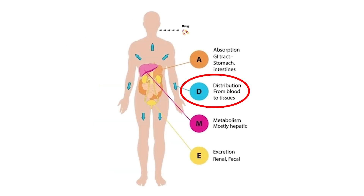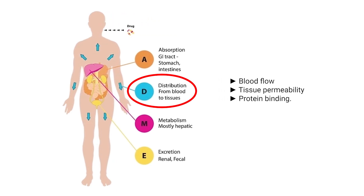Distribution. Once absorbed, the drug is distributed throughout the body. It travels through the bloodstream and penetrates various tissues and organs. Distribution is influenced by factors such as blood flow, tissue permeability, and protein binding.